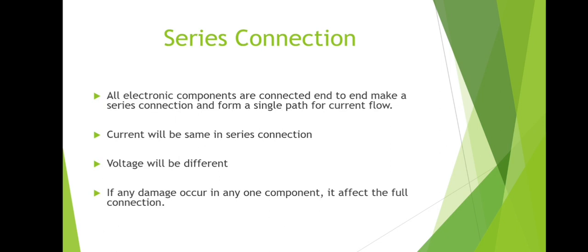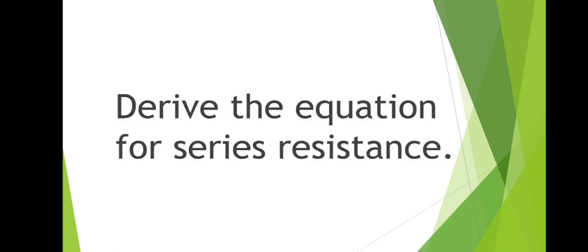In the previous video we saw about series connection. We know that electronic components are connected end to end — that is known as series connection — and make a single path for current flow. In series connection, current will be the same and voltage will be different. If any damage occurs in a single component, it affects the full circuit; that is the only disadvantage in series connection.